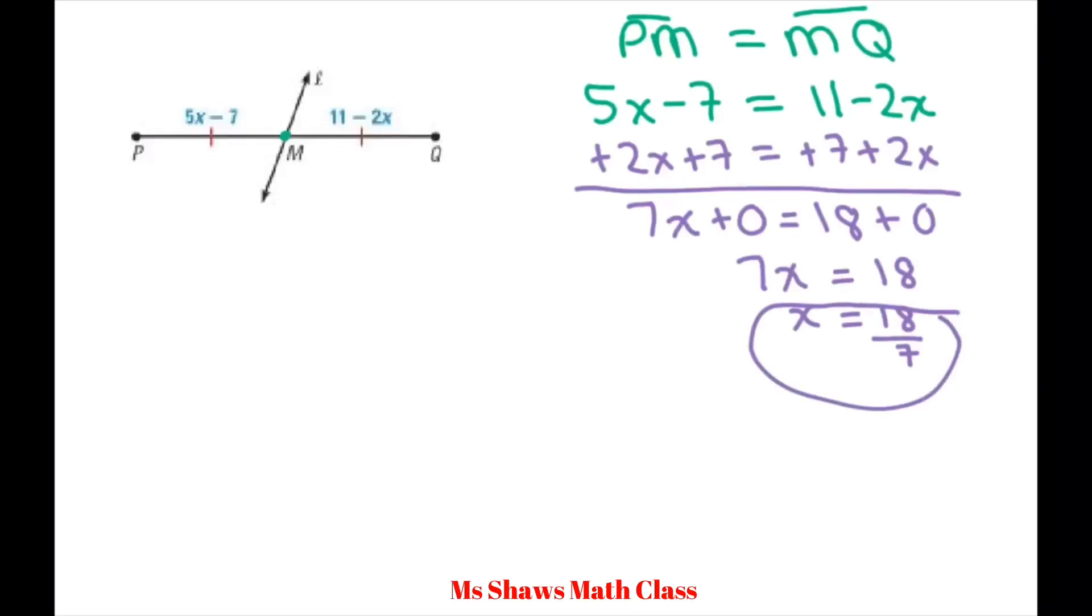However, we need to make sure that's right because it does look weird. So we're going to use our property of substitution and replace every X with 18 divided by 7, and see if these two sides equal.